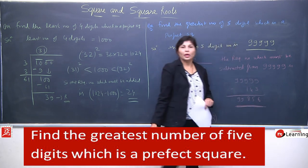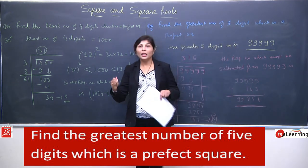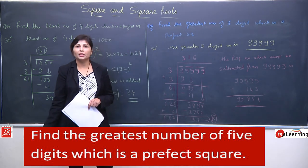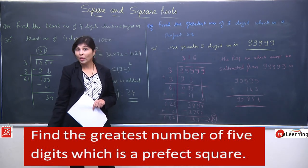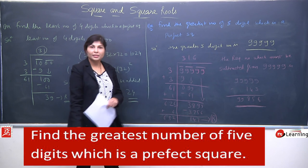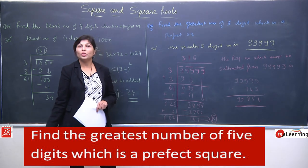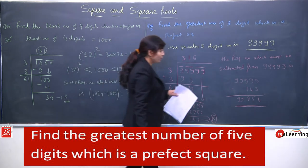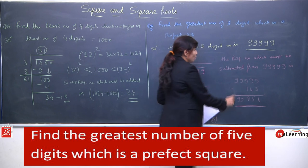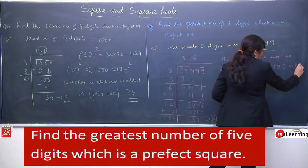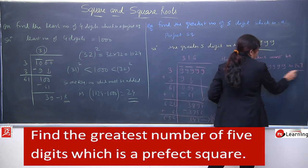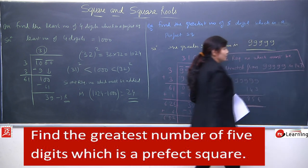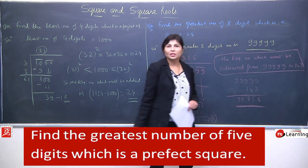99999 - 143 = 99856. 99856 jo hai, yeh greatest 5-digit ka perfect square hota hai. Yeh aaya 143 ko subtract karne se. Toh yahan par aapka answer hoga: 143 is your answer.